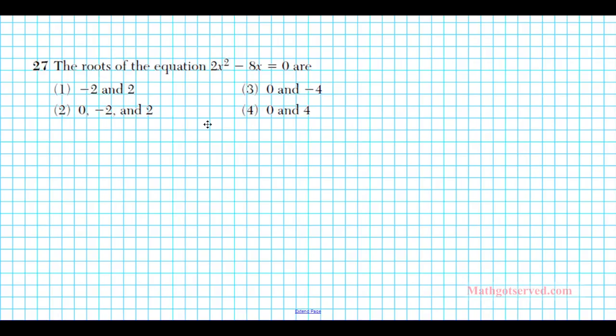Let's move on to the next problem. For question 27, it says the roots of the equation 2x squared minus 8x equals 0 are. So finding the roots of a quadratic equation, in order to find that, all you have to do is factor it completely and set the factors equal to 0. So how can we factor this? Notice that this expression has the greatest common factor of 2x. So we can factor out 2x and we are left with x minus 4 equals 0.